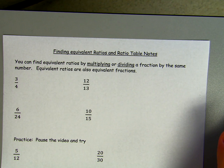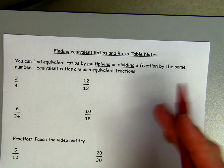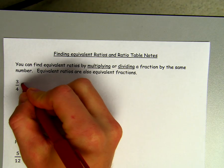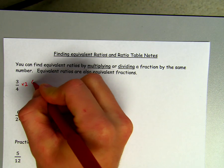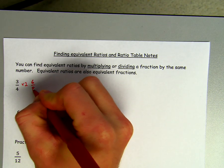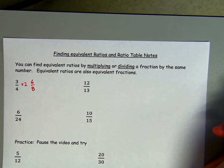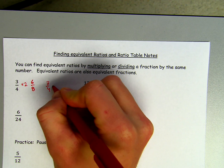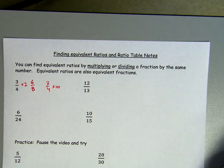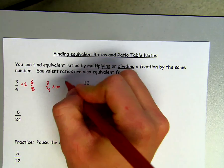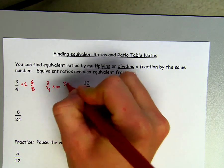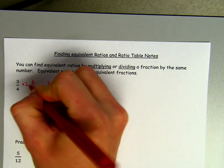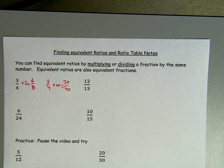To find an equivalent ratio for 3/4, our first example, you can multiply the top and the bottom by 2 and you would get 6/8. You could multiply the top and the bottom by 10 and you would get 30/40. So those are both equivalent ratios to 3/4.